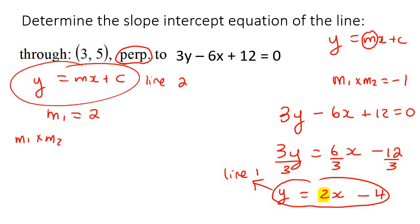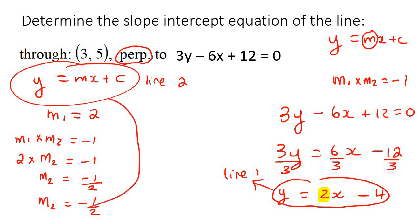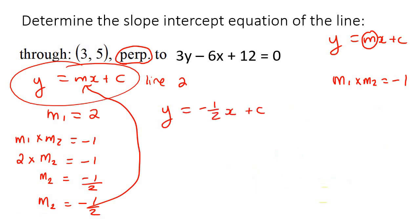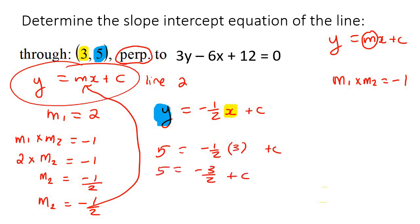Using our perpendicular formula: two times M2 equals minus one, so M2 equals minus one divided by two, meaning the slope of line number two is negative one half. Plugging that in: y equals negative one half x plus C. To find C, we use the given point — that's the x-value and the y-value — giving us five equals negative one half times three plus C. So five equals negative three over two plus C, and therefore C equals thirteen over two. The final answer is y equals negative one half x plus thirteen over two.